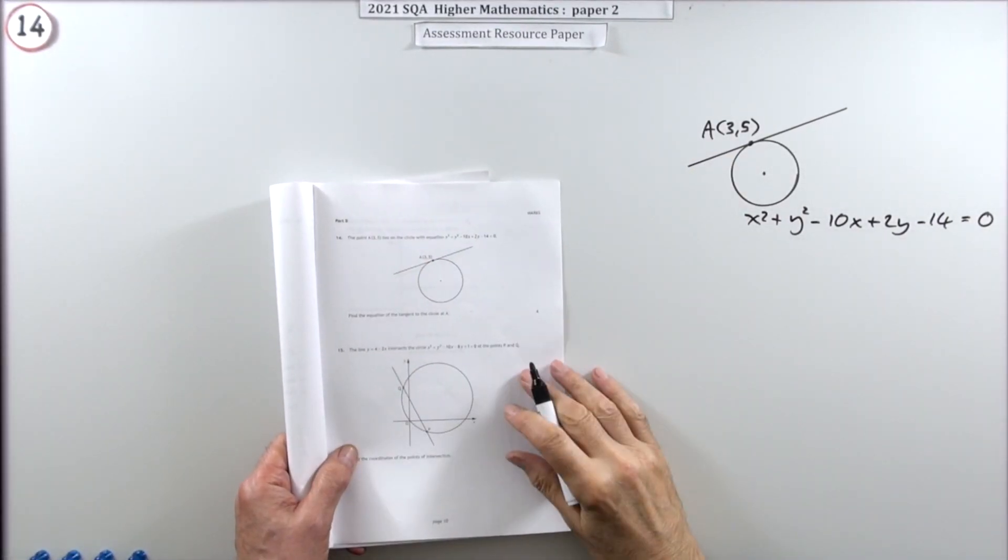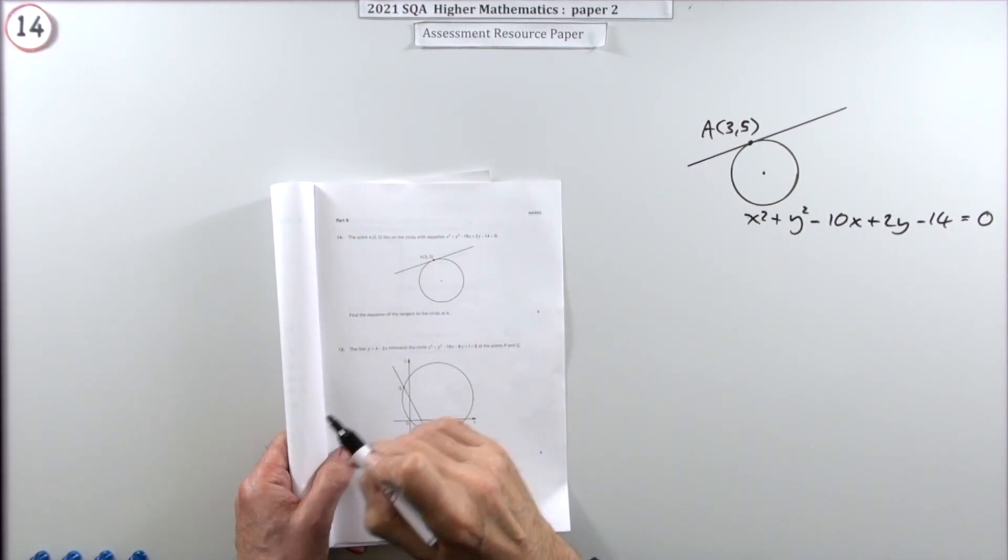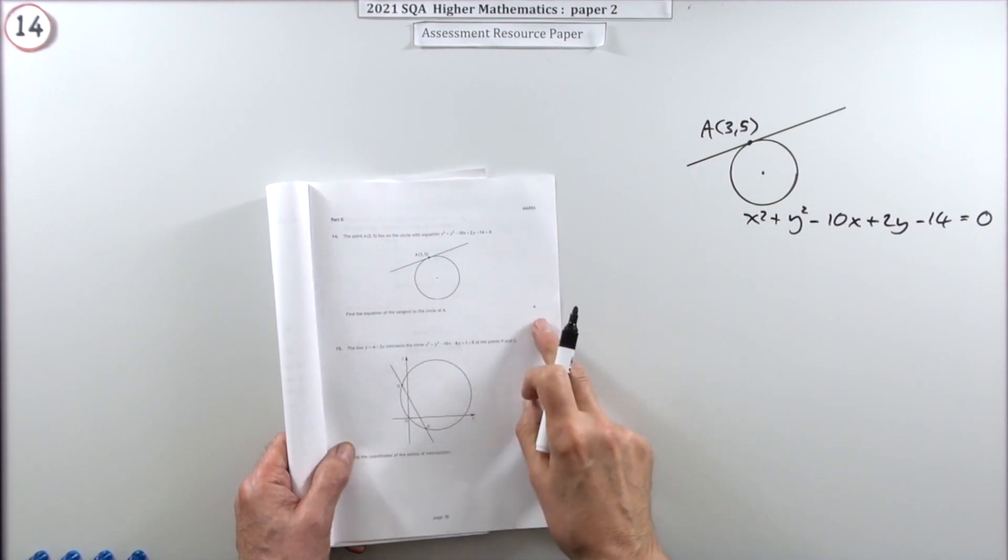Question 14 from paper 2 of the 2021 Higher Maths, the resource paper. Part B this time, there's circles and logs. It's the first of them, circles, and it's an easy one.